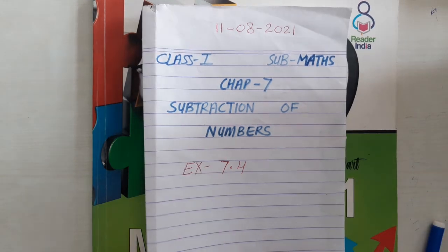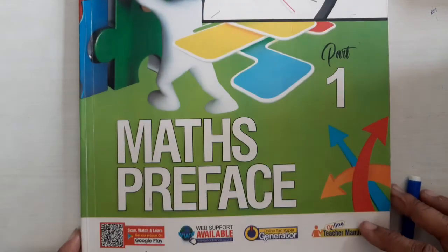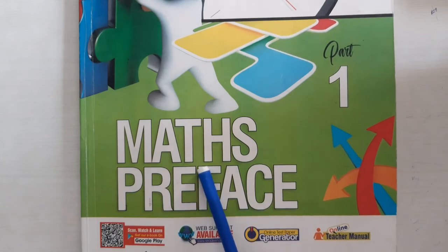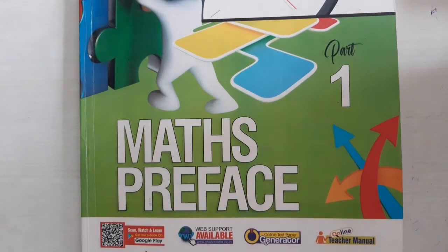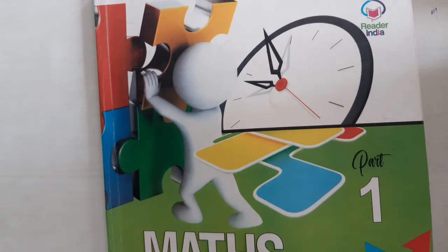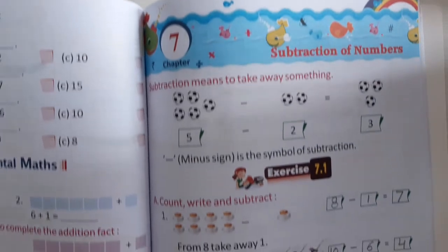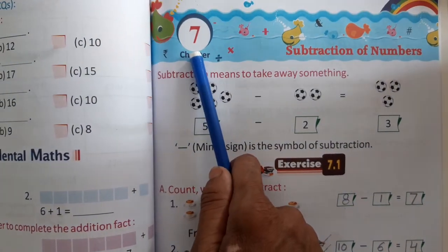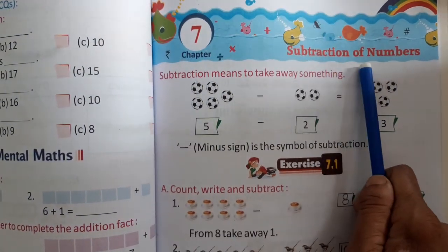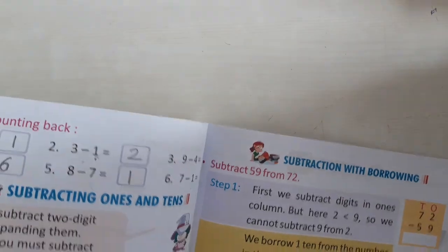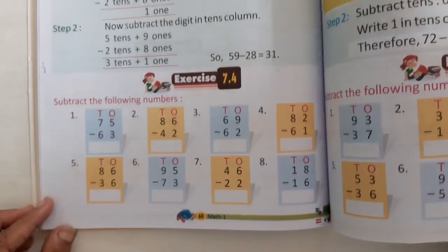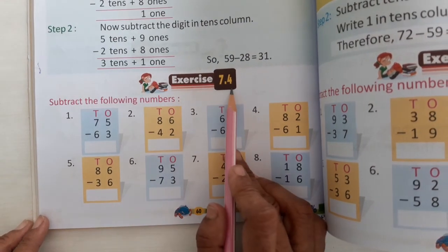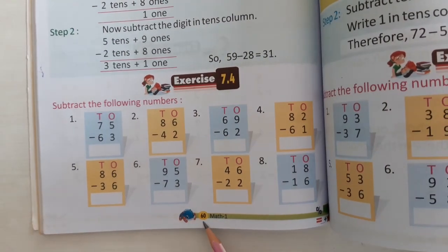Now see in the book, this is your maths book, maths of class 1. Now open chapter number 7. See this is the chapter number 7 subtraction of numbers. Open exercise 7.4. This is exercise 7.4 and page number 60.